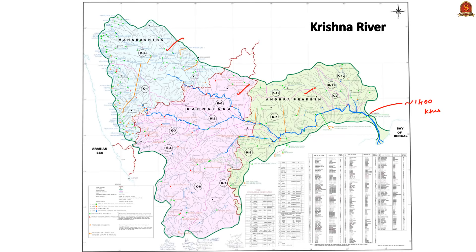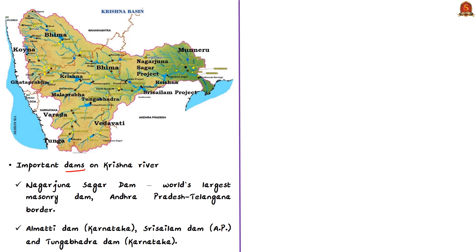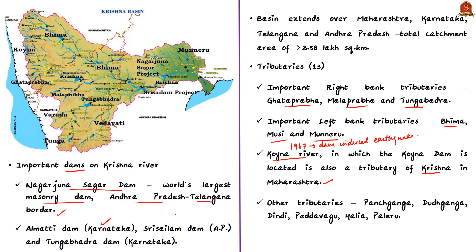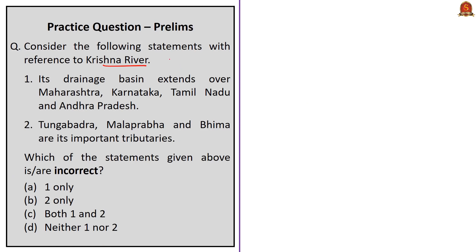From an examination perspective, the important tributaries and dams on the Krishna River are key. The principal right bank tributaries are Ghataprabha, Malaprabha, and Tungabhadra. Important left bank tributaries are Bhima, Musi, and Munneru. The Koina River, where the Koina Dam is located, is also a tributary in Maharashtra — known for the 1967 dam-induced earthquake that killed hundreds. Panch Ganga and Dood Ganga are also its tributaries. The most important dam is Nagarjuna Sagar Dam — the world's largest masonry dam, located on the Andhra Pradesh–Telangana border. Other important dams include the Almaty Dam in Karnataka, the Sri Silem Dam in Andhra Pradesh, and the Tungabhadra Dam in Karnataka.